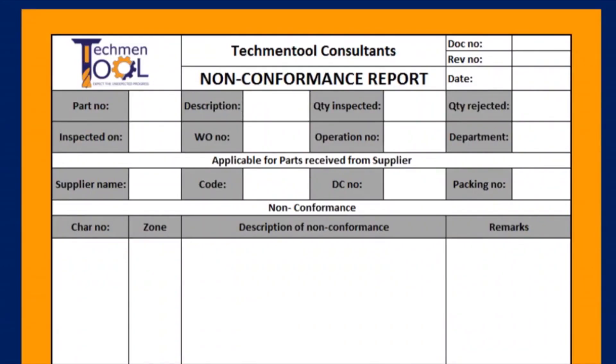This is the sample format of the NC report. Non-conformance report includes information about product details, supplier details, description of NC, and disposition plan.